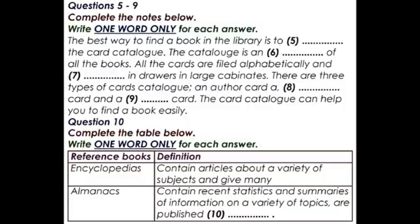For example, all science books are numbered from 500 through 599. Each different field of science has a number within the 500 category. For example, astronomy is 520 and chemistry is 540. The Dewey Decimal System provides a category for every type of non-fiction book.